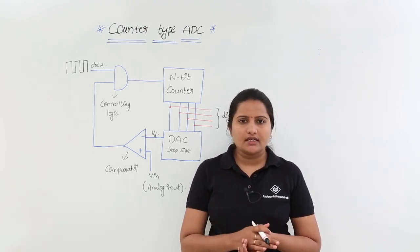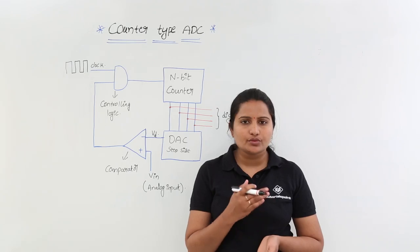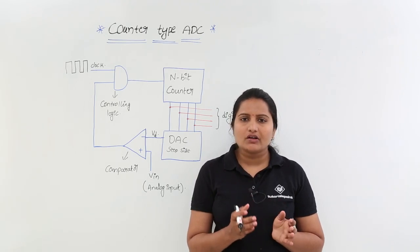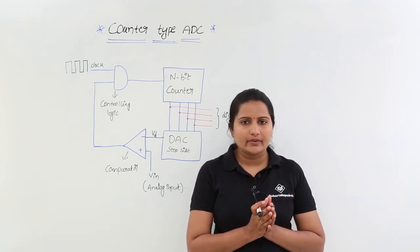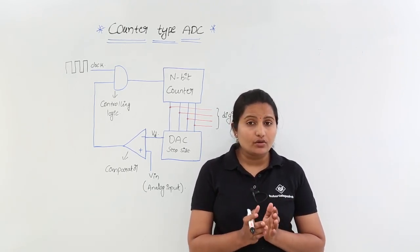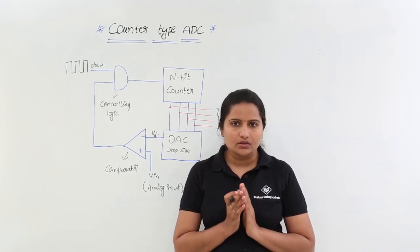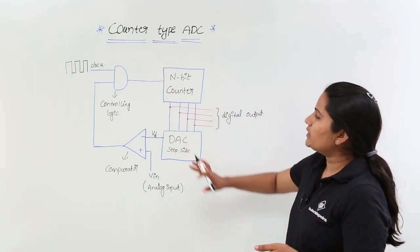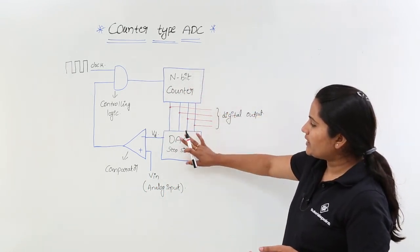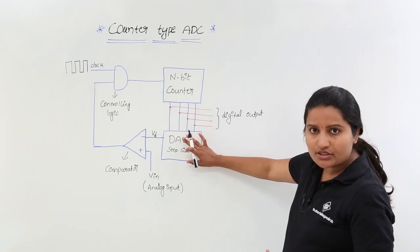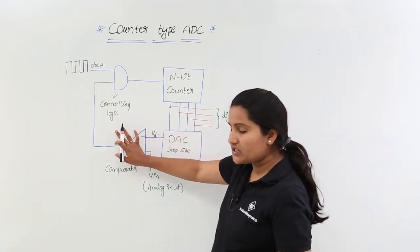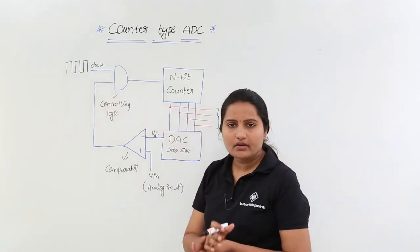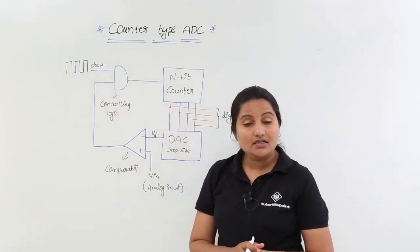Generally this ADC, as the name indicates, is going to convert analog data to digital data. We are calling this counter type ADC because it uses an n-bit counter. Here you can observe the block diagram of counter type ADC. It uses an n-bit counter, a DAC (digital to analog converter), an op-amp used as a comparator, and an AND gate as controlling logic.